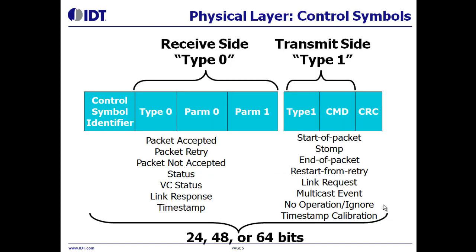Control symbols carry two kinds of information. The first is information that the transmit side sends to the receiver directly — things like start of packet, end of packet, or a multicast event control symbol that signals an event has occurred within the RapidIO network. The other kind is information the receiver sends back to the transmitter: things like packet accepted, packet not accepted so an error was detected, link response, or time stamp.